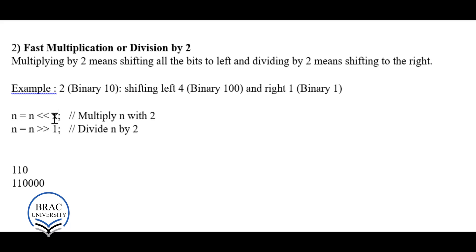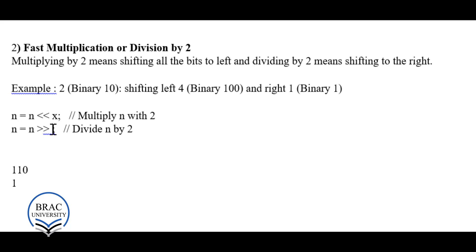For division, we use right shift. For example, 6 in binary is 1 1 0. If we right shift by 1, the last 0 is lost and we get 1 1, which is 3 — that is 6 divided by 2. If we right shift by 2, we get 1, which equals 6 divided by 4 under integer division. So right shifting by x divides the number by 2 to the power x.